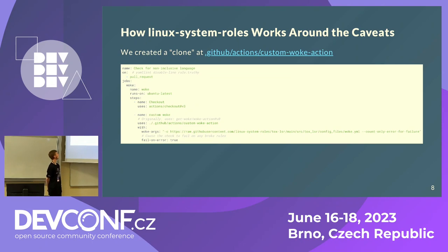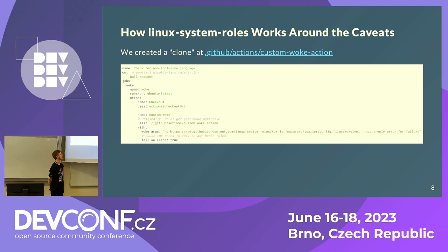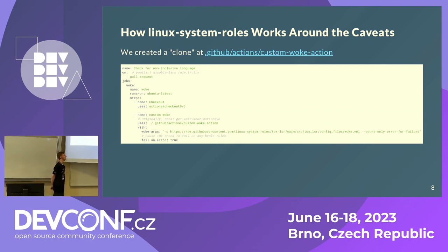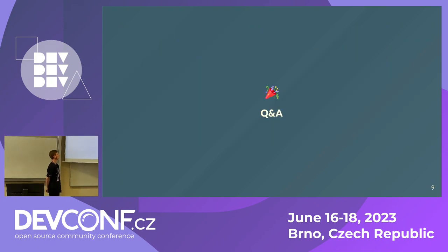Hopefully the developer will return and continue the work, but for now we did the following: we created a clone — kind of forked the project into our local repos — and created a custom action instead of the official one. You can see that we are pointing to our own configuration file that we customized for our needs, and instead of the official action we're using just the path where we copied it to. That's pretty much it from my side — please go ahead with any questions.